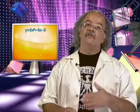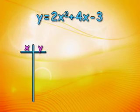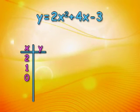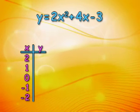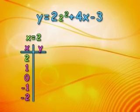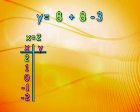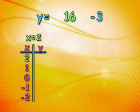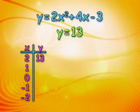As with any equation, we can substitute values for x and solve for y, then put those points on a graph. We'll take the numbers 2, 1, 0, negative 1, and negative 2, and substitute them into the equation. When x equals 2, 2 squared is 4, 2 times 4 is 8, 4 times 2 is 8, 8 plus 8 is 16, and 16 minus 3 is 13. So, y equals 13.